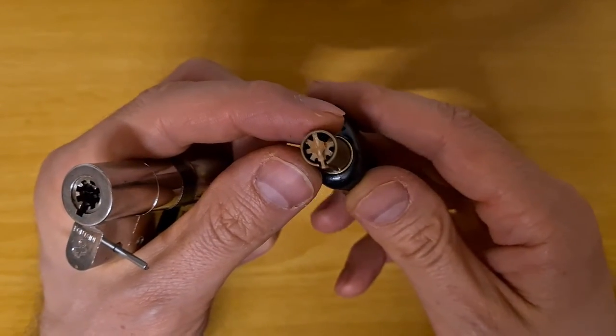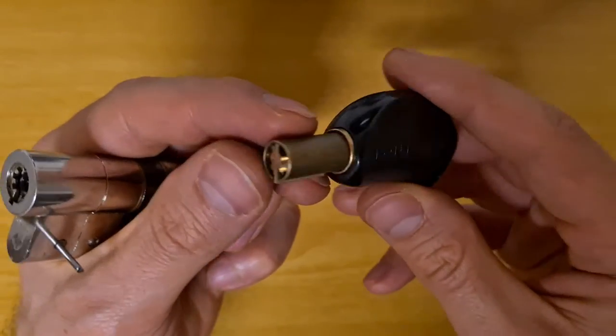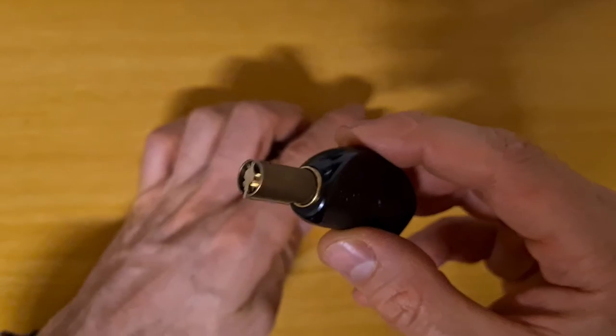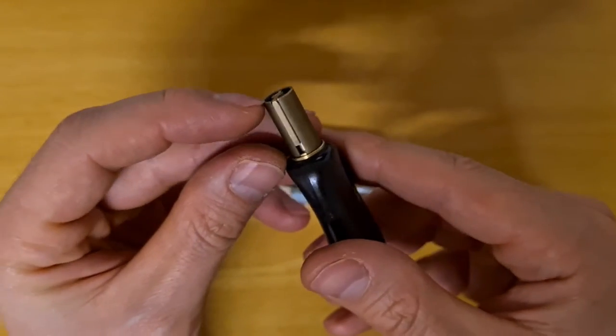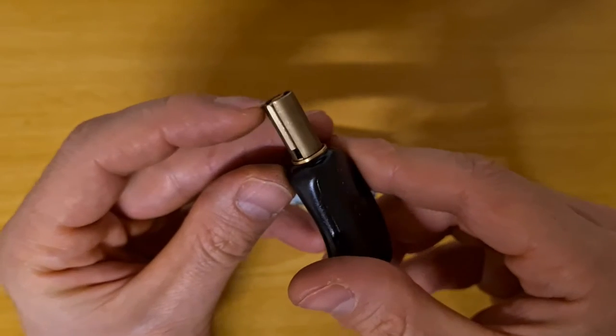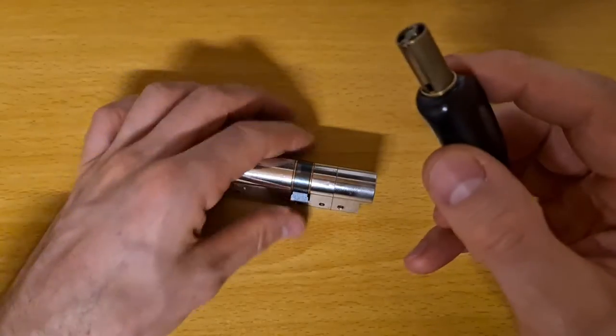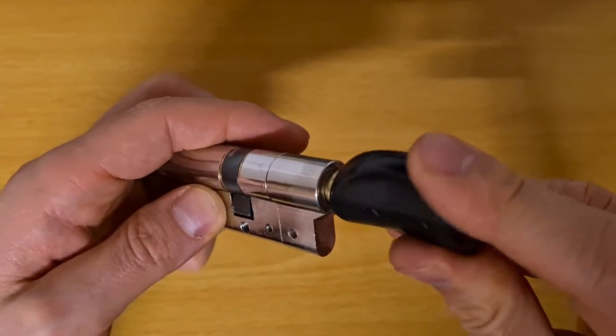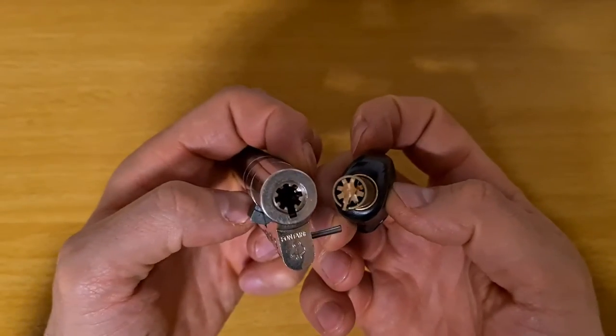Even way earlier than stealth key came out, there was some key already that was hiding its bitting. And the way it works is it just shrouds the key in this retractable thingy which when you insert it in the lock just retracts and you can operate the lock as normal. I think it's a very clever design.